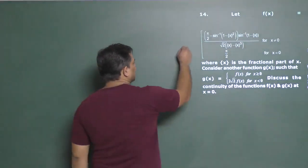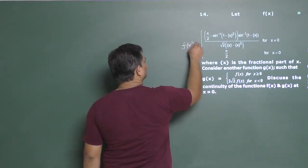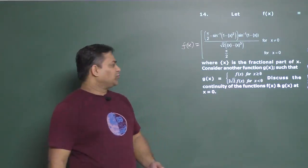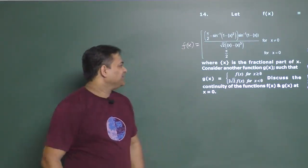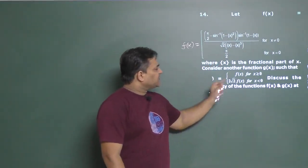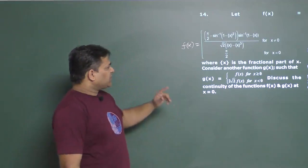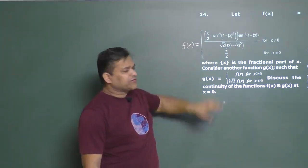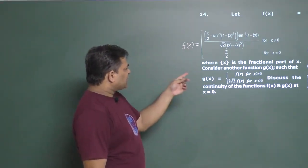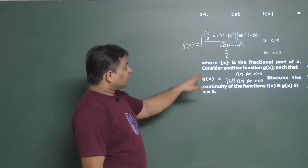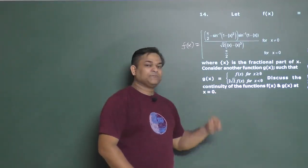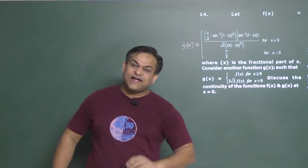Let f(x) equal a certain function — this is f(x). This is not a dangerous function, so if we ask about f(x), it will relate to a function g(x). Let f(x) equal x when x is not zero, and when x equals 0, the value is π/2. The curly bracket denotes the fraction part. Consider another function g(x). Discuss the continuity of f(x) and g(x).